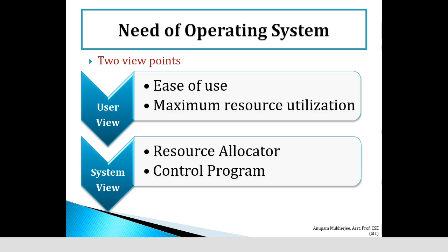Another view of the OS is that it is a control program. A control program controls the execution of other programs. For example, sometimes we find that our system has hung — everything is in a deadlock state, nothing works. At that time we use Alt+Ctrl+Del from the keyboard to interrupt that particular program or process which is keeping our system busy.